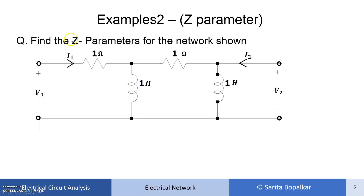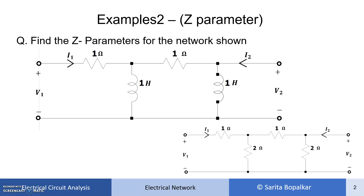This example asks us to find the Z parameters for a network that includes resistors and inductors. In the previous video we solved an example where all the elements were resistive, and now we are solving a network which includes both resistance and inductors.